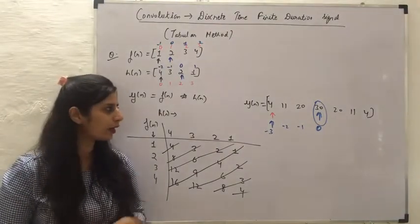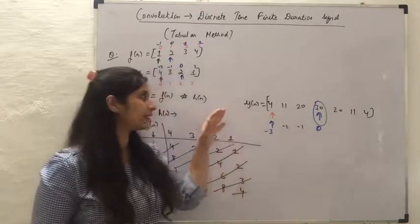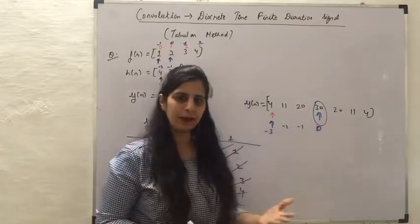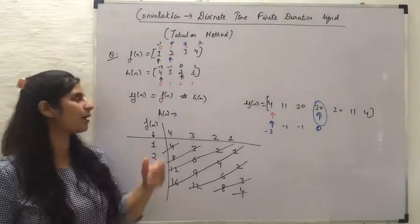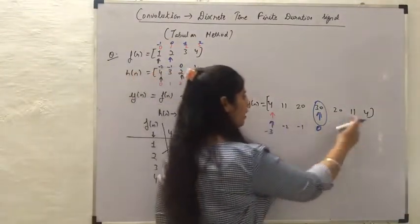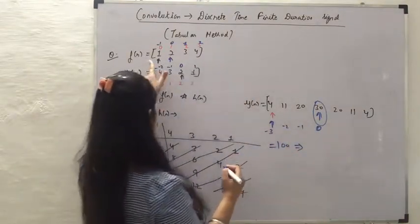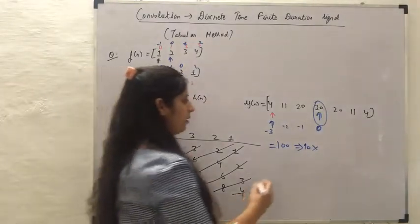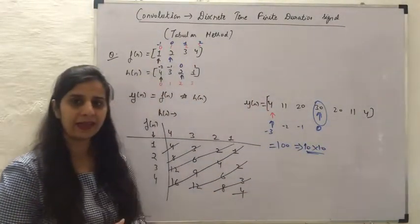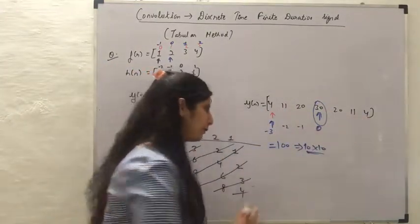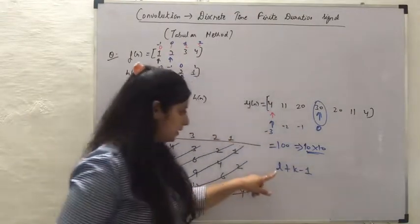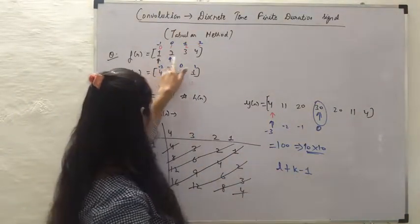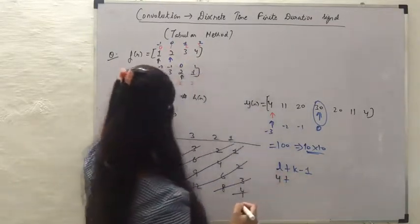This is how we find the arrow position for a result obtained using the tabular method. As a verification, the sum of all y of n values equals 100, which equals the sum of f of n values — which is 10 — multiplied by the sum of h of n values — which is also 10 — giving 100.